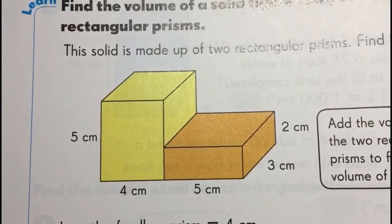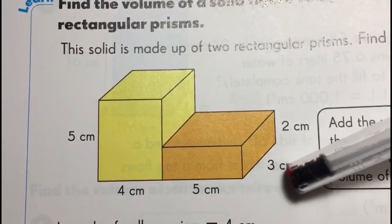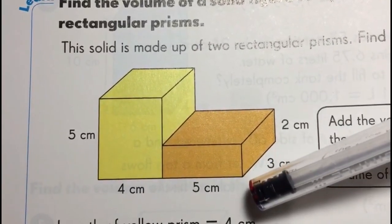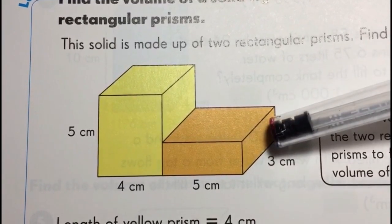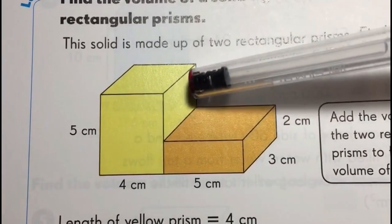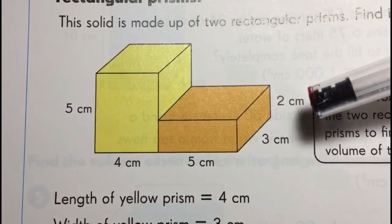For example, in this solid, three centimeters is the length of this prism, the dark brown one, and it's also the width of the yellow one. So as long as you're aware of that.